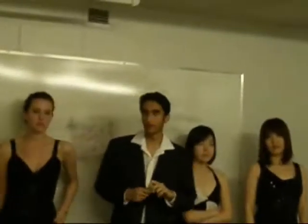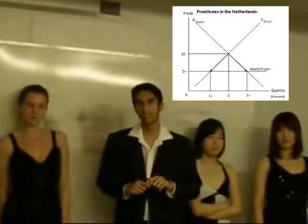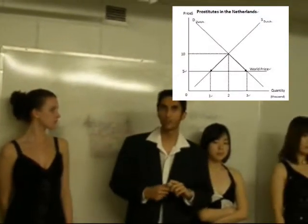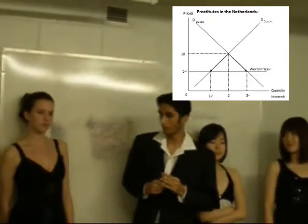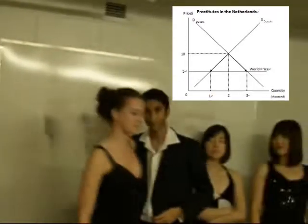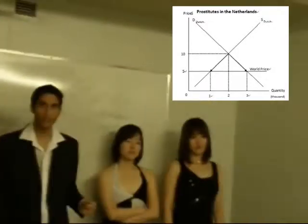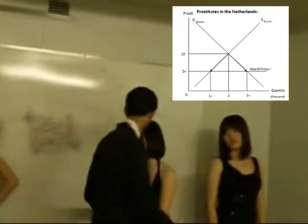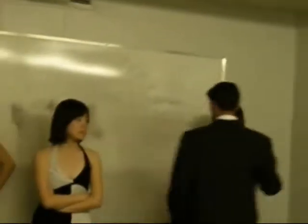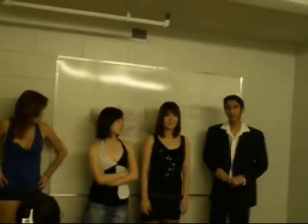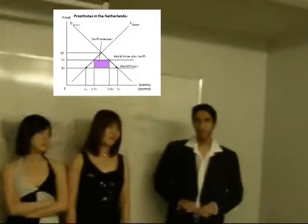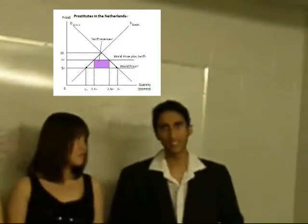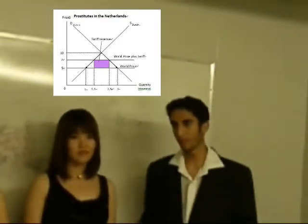With an equilibrium price in Holland of $10 and a world price of $5, when Holland opens up to trade, Dutch producers would reduce. And the quantity imported would increase. The government sees this and decides to impose a tariff. The tariff of $2 would increase the price to $7, reducing the quantity of imports.